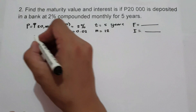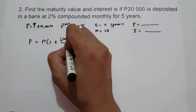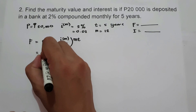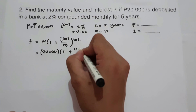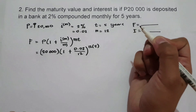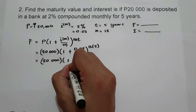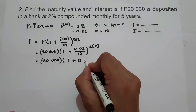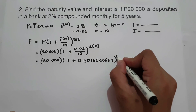To find the future value, we use the formula F equals P times 1 plus I raised to M over M, raised to MT. Substituting: 20,000 times the quantity of 1 plus 0.02 over 12, raised to 12 times 5. Simplifying: 0.02 divided by 12 equals 0.00166666667, and 12 times 5 equals 60.